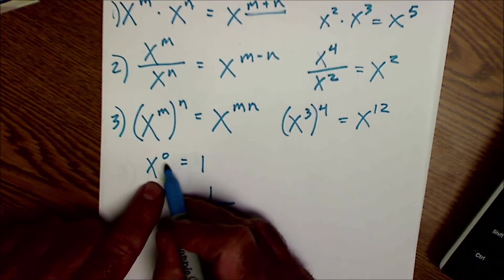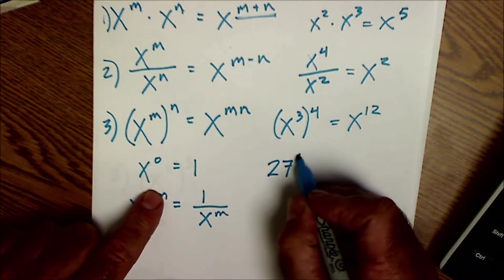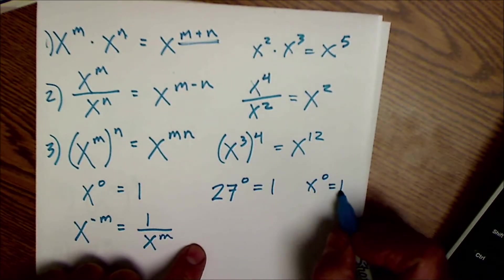Anything to the zero power is always equal to 1. So if I had 27 to the zero, that's still equal to 1. x to the zero would be equal to 1.